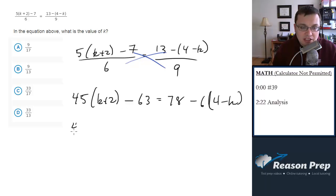Let's distribute this. We get 45k plus 90 minus 63 equals 78 minus 24 plus 6k. Be careful about your signs. So let's combine like terms here. Let's get all the k's together. So we're going to throw the 6k on this side, so subtract 6k from both sides. We're going to get 39k. 90 minus 63 is 27.